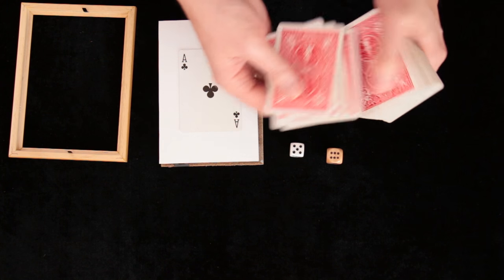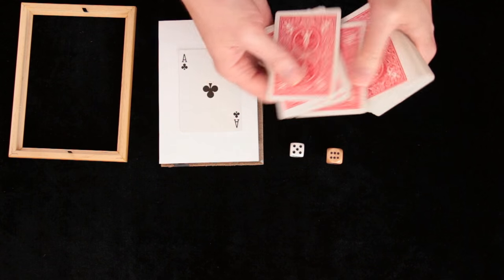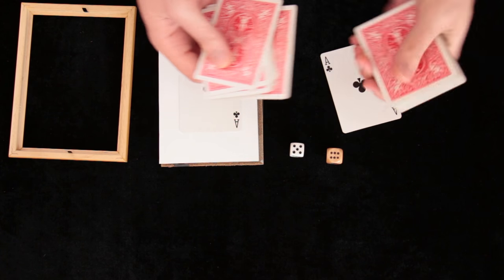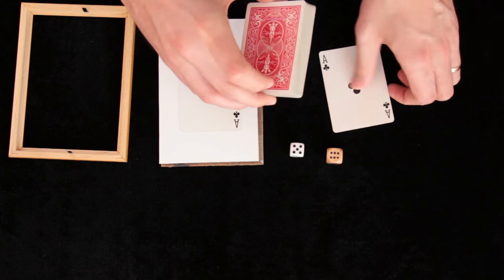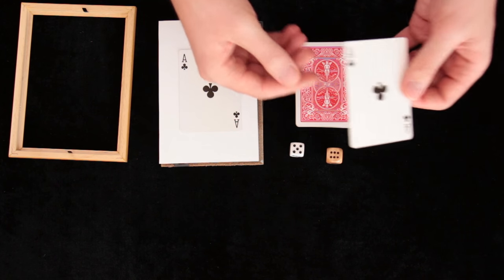1, 2, 3, 4, 5, 6, 7, 8, 9, 10, 11, 12, 13, 14. This will be his selection and in reality we forced this card on him.